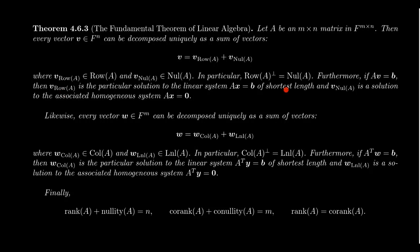And it's the solution of shortest length. That is, there's no solution to A·X equals B that's shorter than V-row. And V-null is a solution associated to the homogeneous system A·X equals zero.